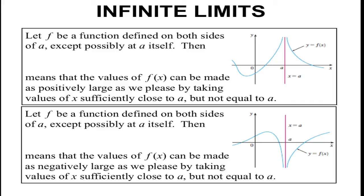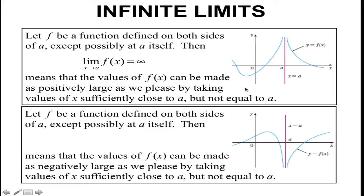This leads into infinite limits. We have some function f defined on both sides of A, except possibly at A itself. So here x equals A, and we have a graph going up toward A from the left and up toward A from the right. We say the limit as x approaches A of f of x equals positive infinity. This means the values of f of x can be made as large as we please by taking values of x sufficiently close to A but not equal to A — the function is approaching really large numbers as we get very close to x equals A.